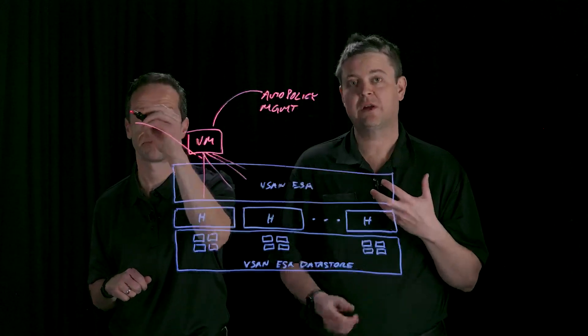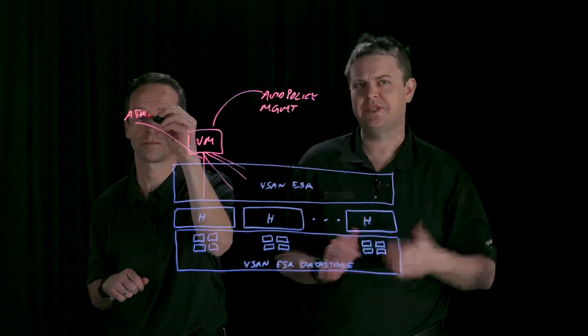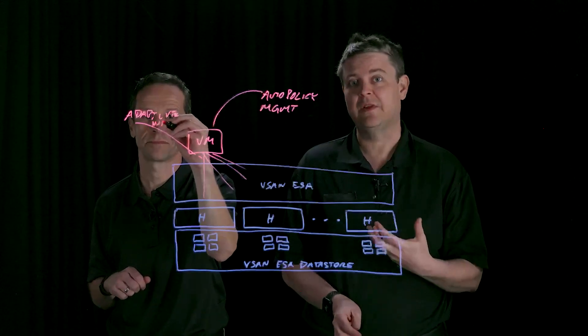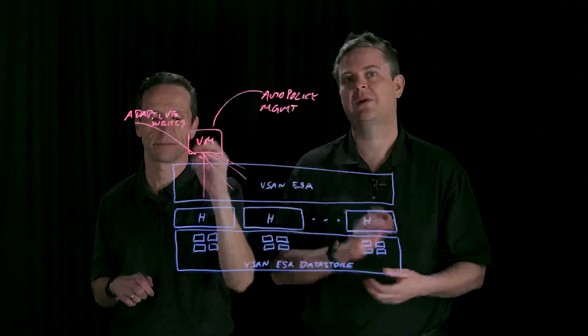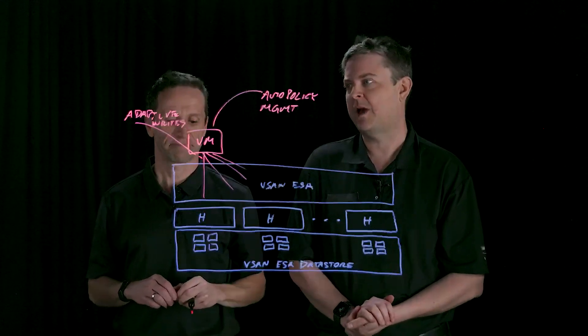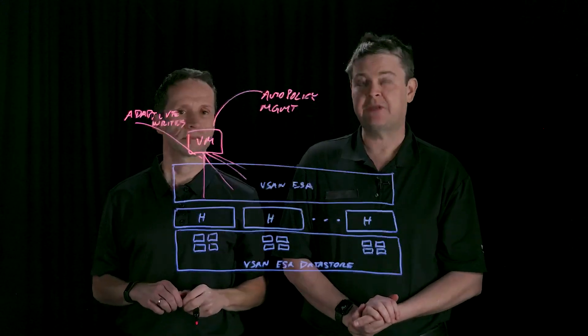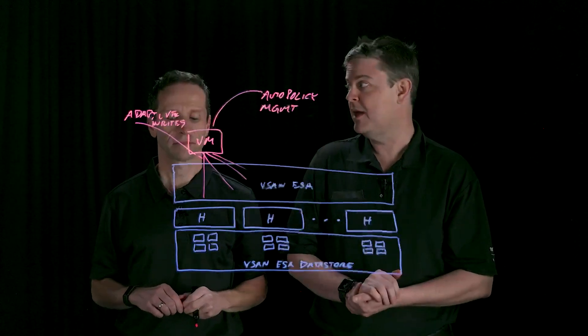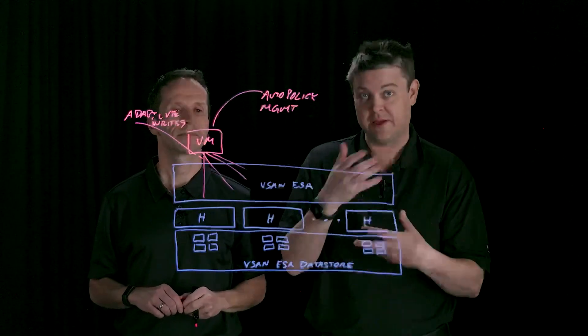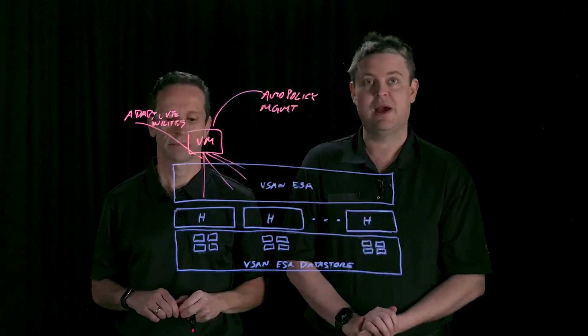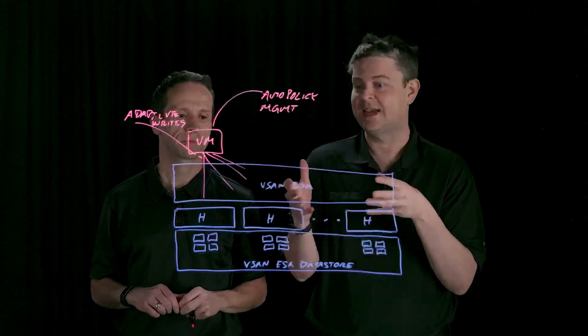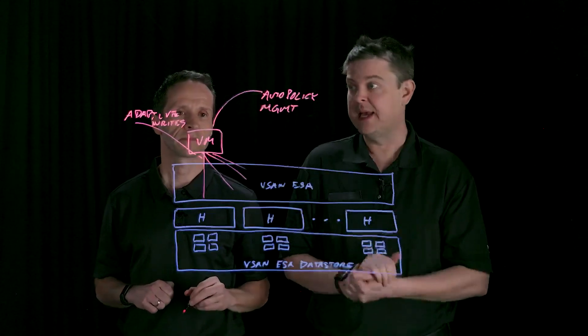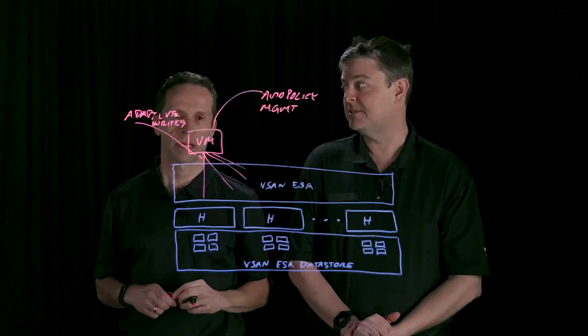And write throughput is historically, just across storage platforms in general, one of the most difficult aspects. Large block writes are particularly something that's often very difficult. It's one of the four corner benchmarks you run to understand the limitations of the platform. And looking at some of the benchmarks from the original storage architecture against the Express Storage Architecture with this adaptive write path, we are seeing multiplicative impacts on performance. You should always be looking at ESA for any greenfield deployments going forward. But if you're looking at large write throughput, ESA has some amazing capabilities. Absolutely.